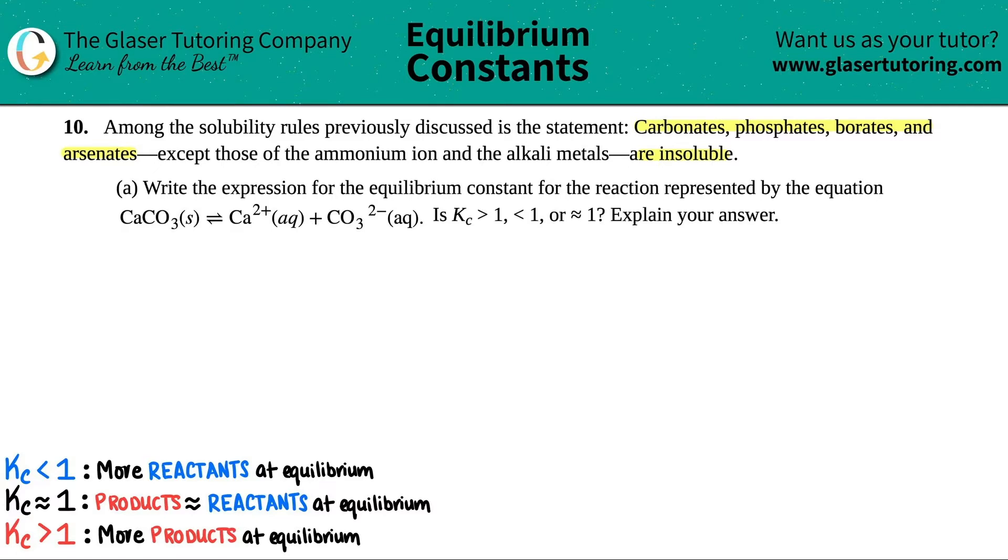Letter A says write the expression for the equilibrium constant for the reaction represented by this equation. So we have calcium carbonate is a solid, turns into Ca2+ and CO3 2-. And then is a follow-up question. Is the Kc greater than 1, less than 1, or equal to 1?